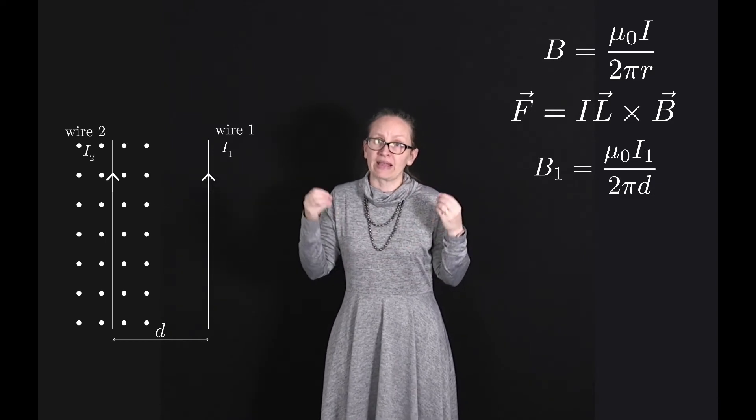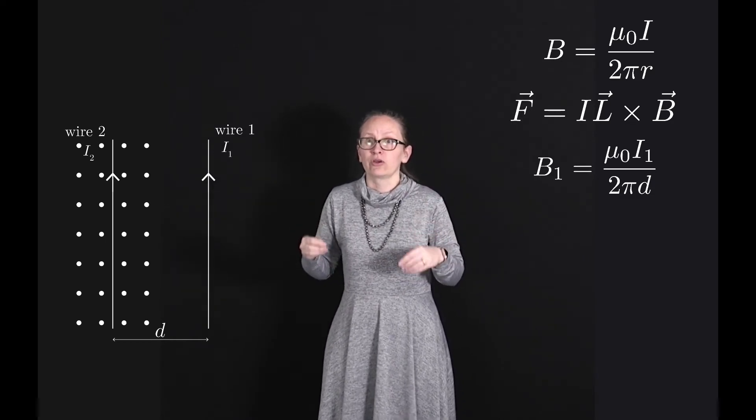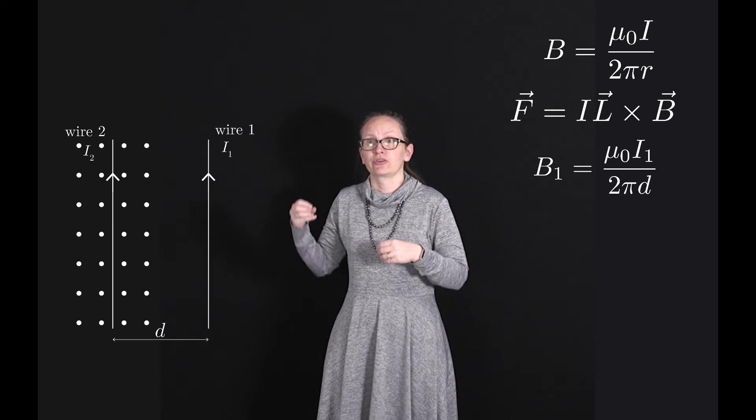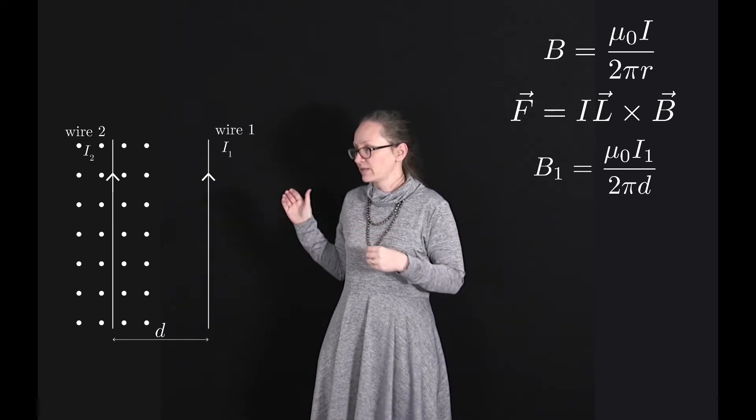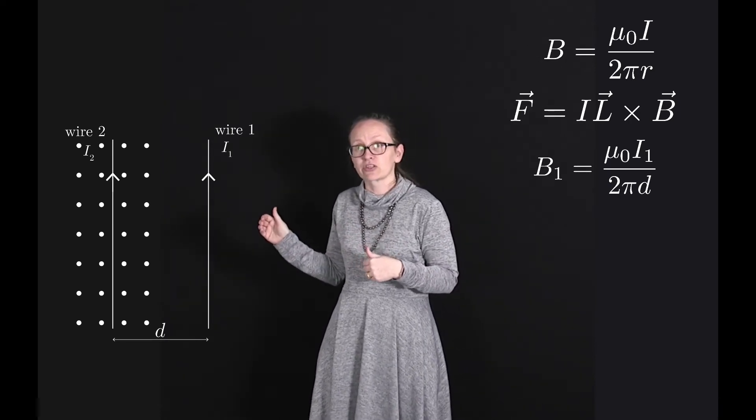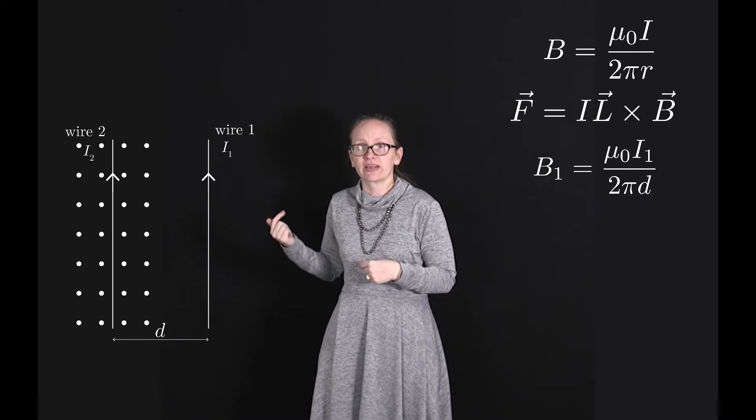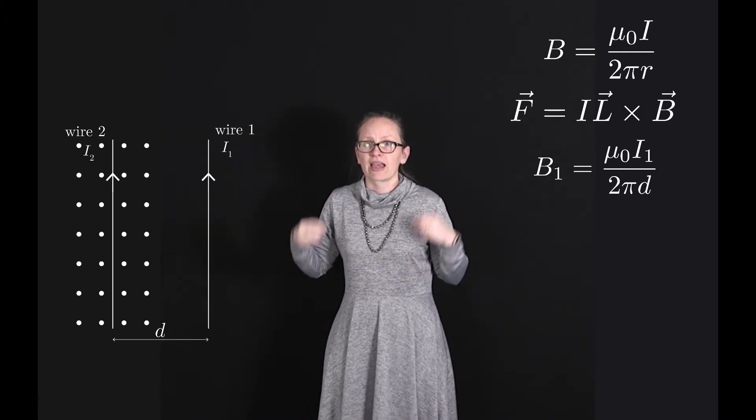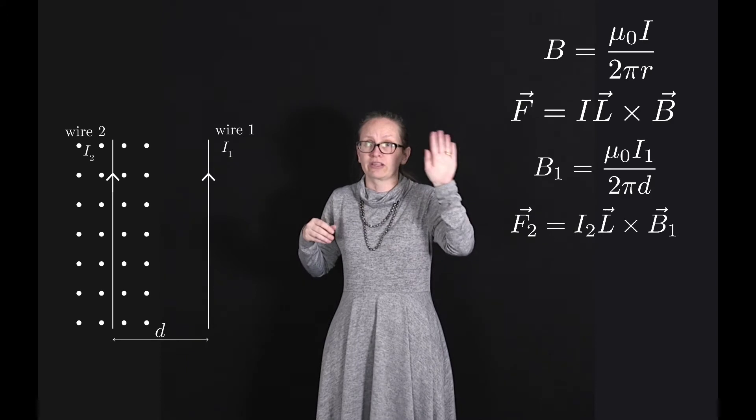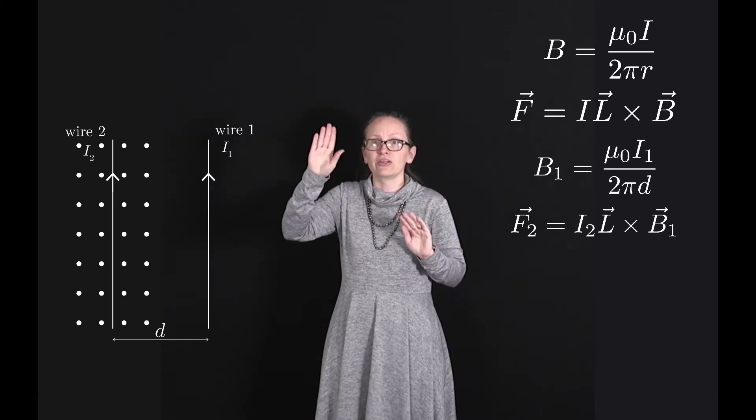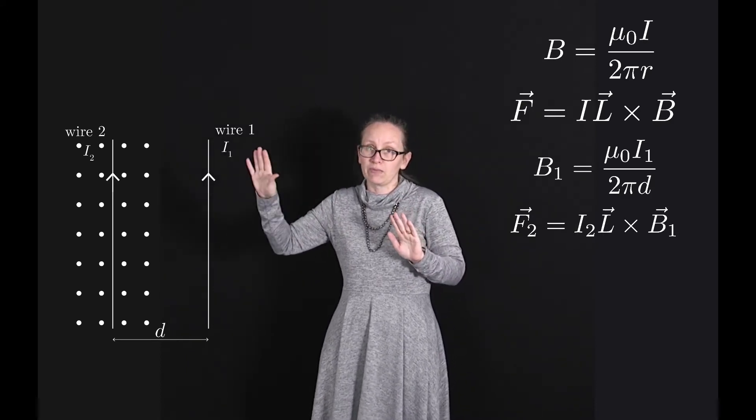Now because there's now a magnetic field at wire 2 which is perpendicular to the direction the current is flowing, the magnetic field is coming out of the screen and the current is flowing up the screen, wire 2 is now going to feel a force. We can write the force on wire 2, F₂, equals i₂L cross B₁.